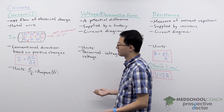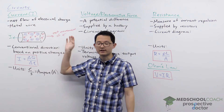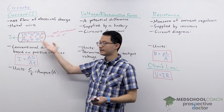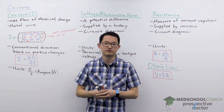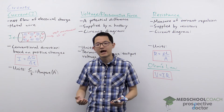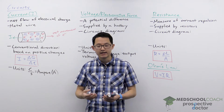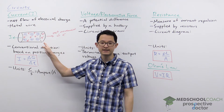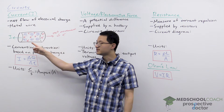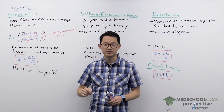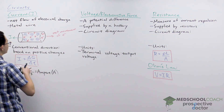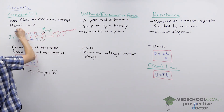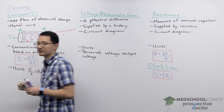One last thing about current: this is the net flow of electrons in a particular direction. Normally electrons don't have any desire for net movement in a certain direction. The way we can get this to happen is if we have a potential difference. Electrons move spontaneously towards higher potential, so this net movement of electrons will only occur if there is high potential on one side of the metal wire and low potential on the other side.